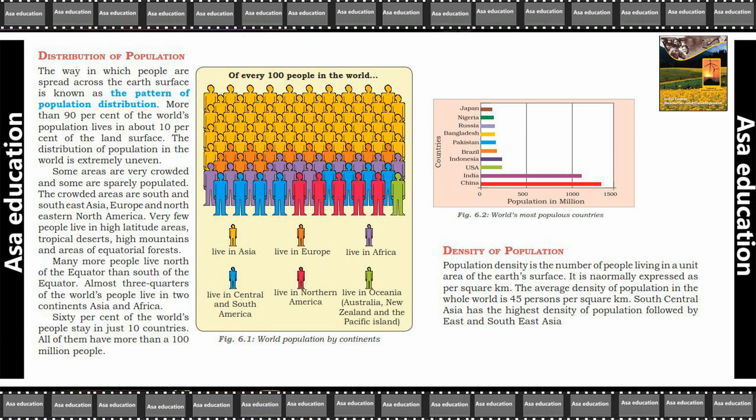More than 90% of the world's population lives in about 10% of the land surface. 90% se zahadha joh poori dunya ke abadi hai, woh khali 10% hitre pe rehti hai land surface ke. The distribution of population in the world is extremely uneven. Or ye joh population ka distribution hai, poori dunya mein yeh bhoat uneven hai.